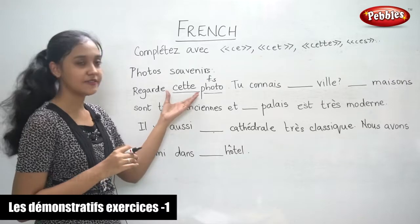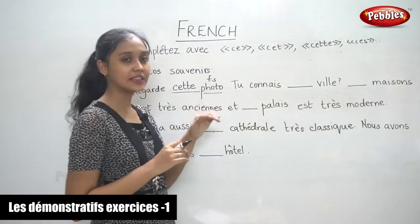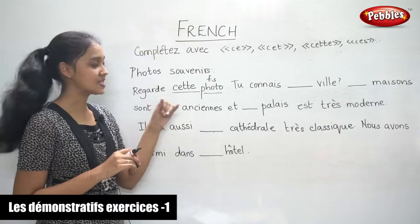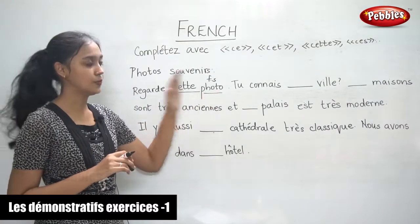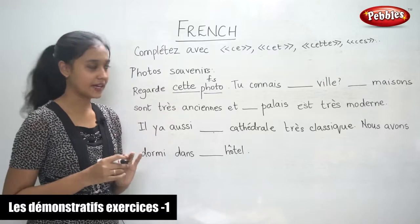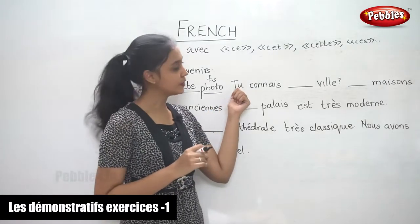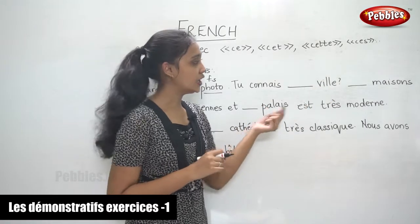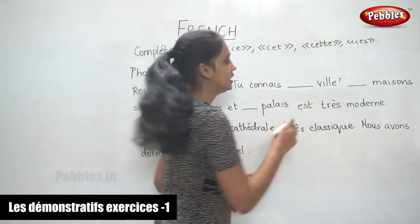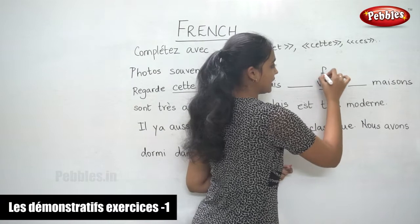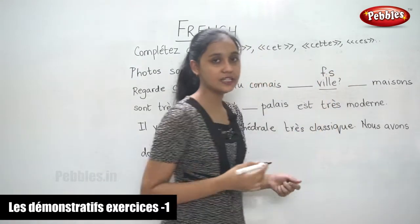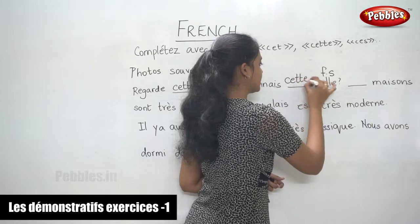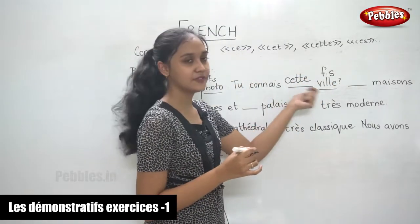See this photo. So it is very simple. You just have to look at the noun and see if the noun is masculine or feminine, singular or plural, and fill in the blanks. The next one: Tu connais dash ville. Now ville is the noun. It is feminine singular again, so we fill in cette. Tu connais cette ville.